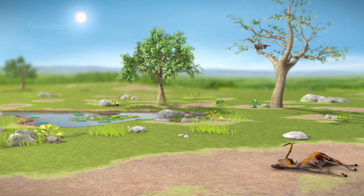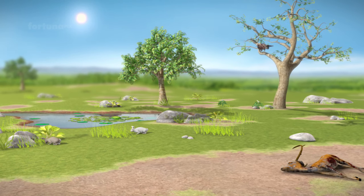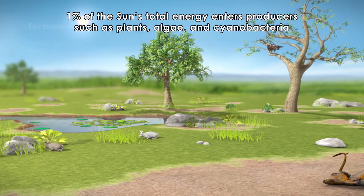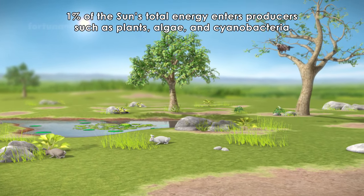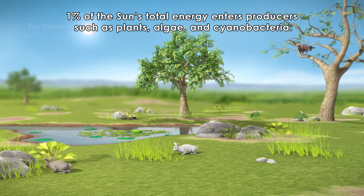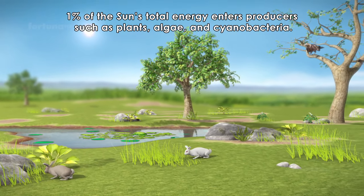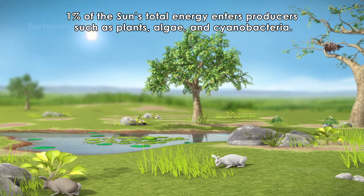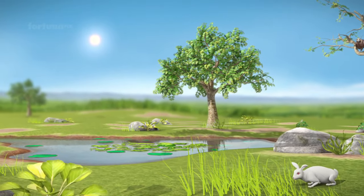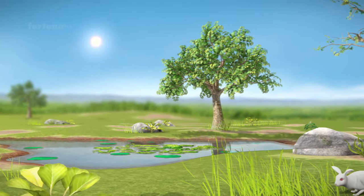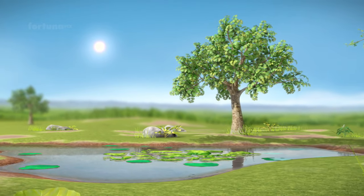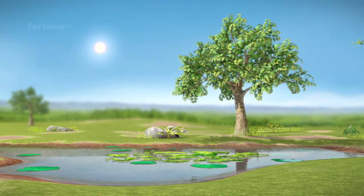The Sun is the main source of energy. About 1% of the Sun's total energy enters producers such as plants, algae, and cyanobacteria. The remaining solar energy will be used to evaporate water or will simply dissipate into outer space.